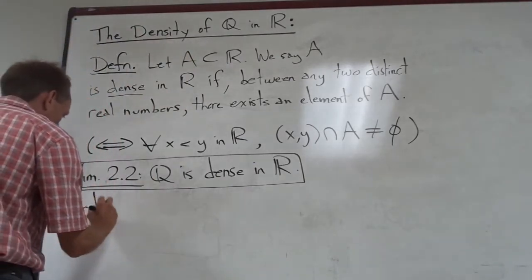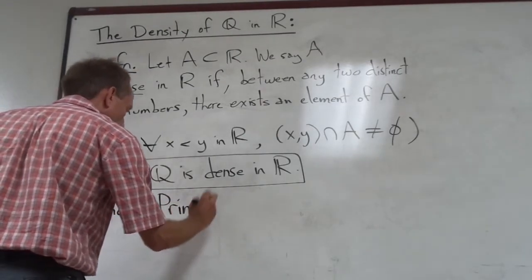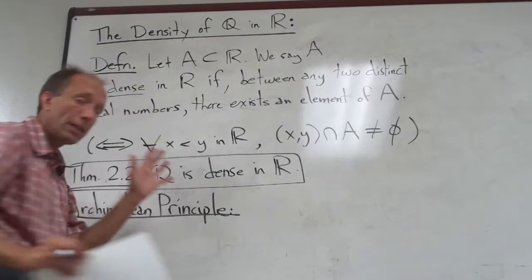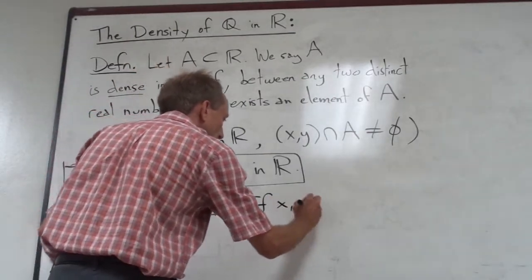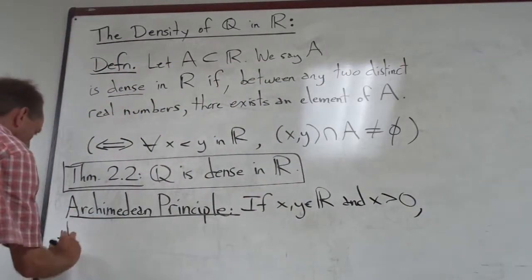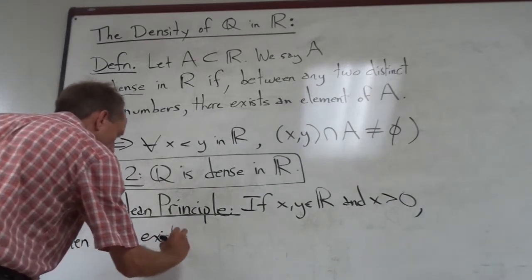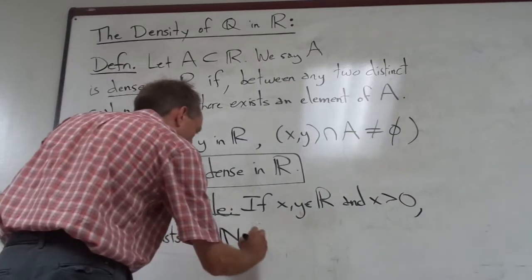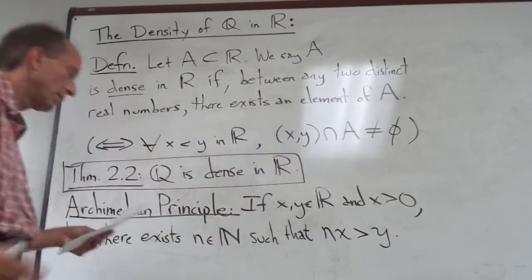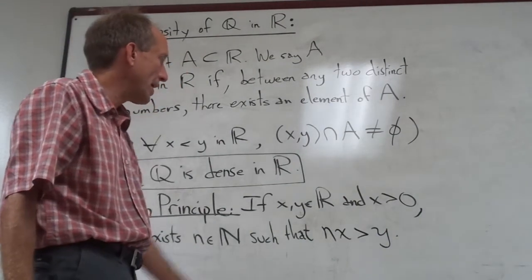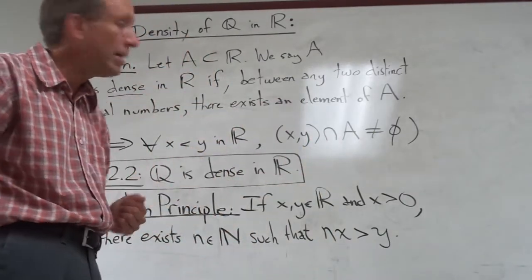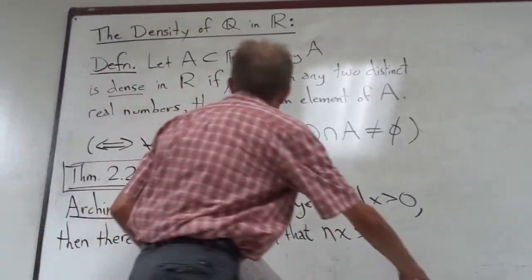The Archimedean principle says the following — and I'm going to phrase this a little bit stronger than what it says in our book. If we take two real numbers x and y, and assume that x is greater than zero, then there exists a natural number n such that n times x is greater than y. Kind of makes sense: x is positive, and if you multiply it by a sufficiently large natural number, n times x can be as big as you need it to be — so you can make it larger than y if you so desire.